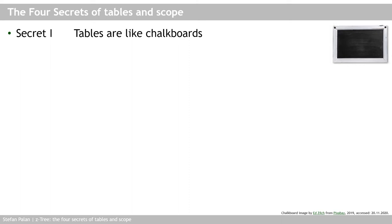Look at the chalkboard on the right and imagine it to be a Ctree table. Each chalkboard or table has a name and it has columns of information written on it. Now these columns are the variables which correspond to vectors of data. Notice the chalkboard here is nailed fast to the top of the slide. Alternatively, look at the wall in front of your desk and imagine a chalkboard were nailed to it, right below the ceiling. Fix that image in your head and follow me to secret two.